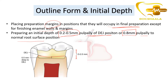This involves preparing an initial depth of 0.2 to 0.5 mm pulpally of the DEJ position, or 0.8 mm pulpally to normal root surface position. In this image you can observe the DEJ depth — this is the dentino-enamel junction and these are the prepared cavity walls. They have prepared a 0.5 mm depth of the cavity wall from the dentino-enamel junction. You can either prepare it like this, or prepare the floor 0.8 mm pulpally from the normal root surface position.